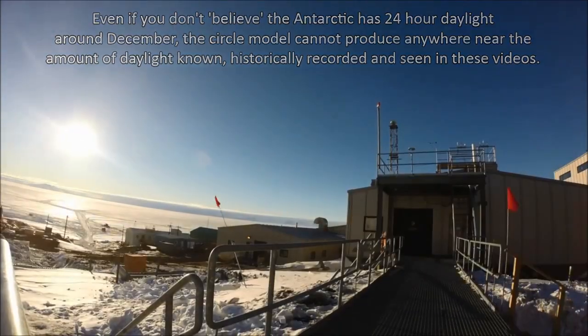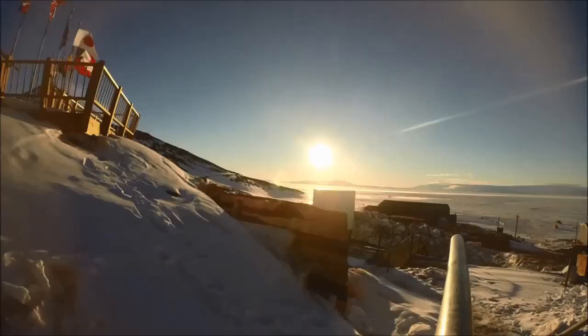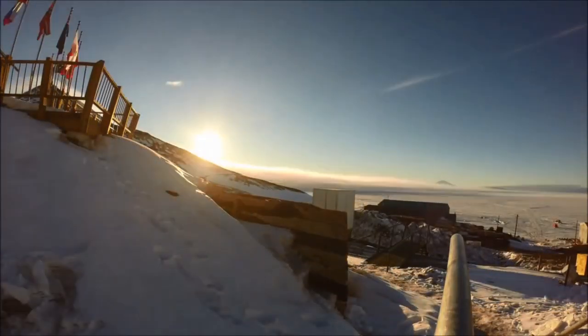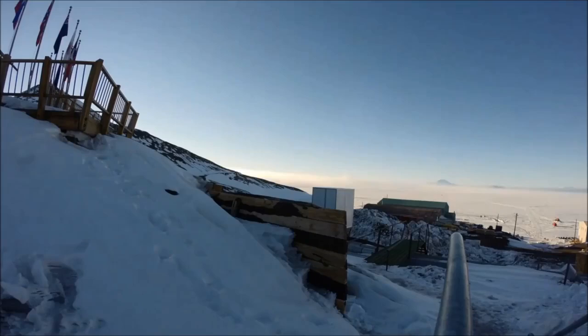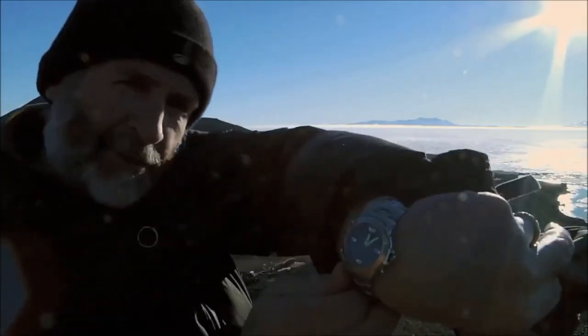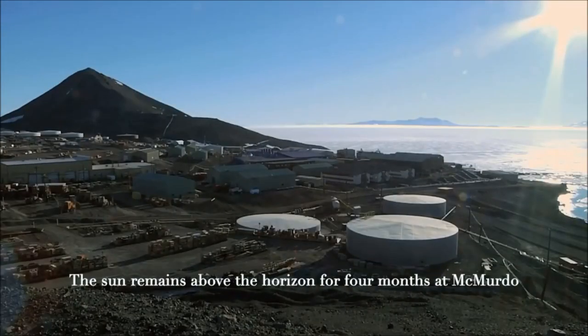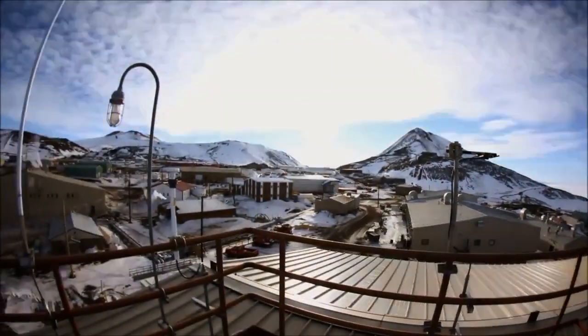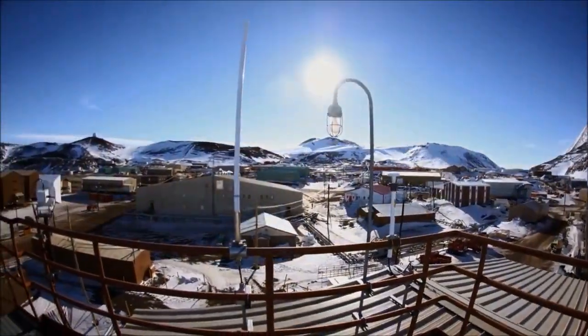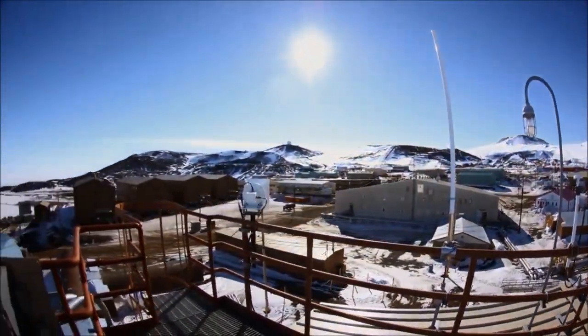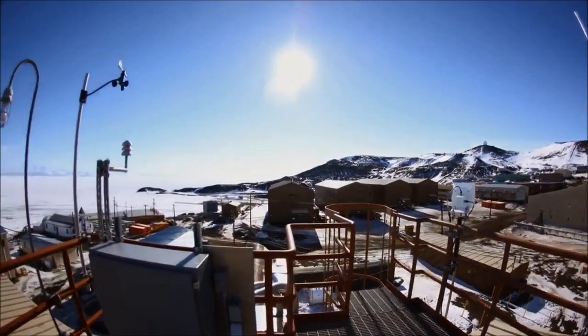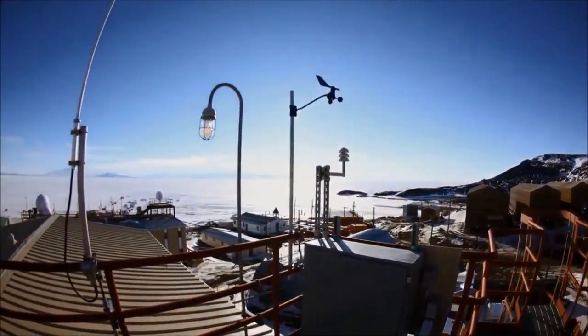It's funny because flat earthers always accuse ball earthers of denying facts and denying reality in order to cling on to their model. But they don't see the irony in the fact that they're doing that themselves with a circle model. The earth is flat and stationary, but it's not a circle. That doesn't work. And the two don't need to be the same. The two don't need to be welded together forever.